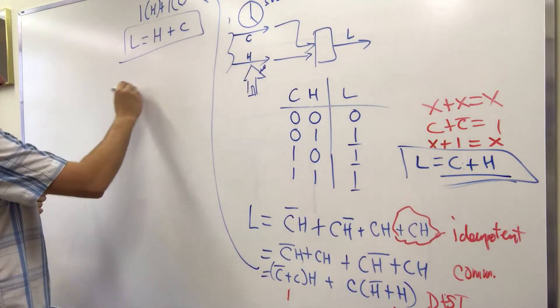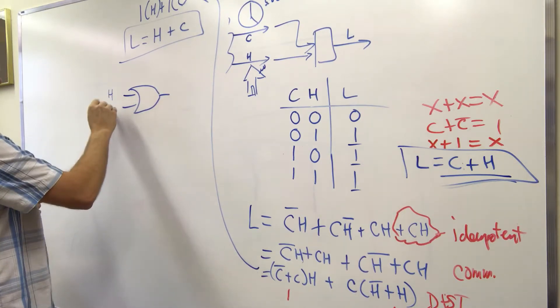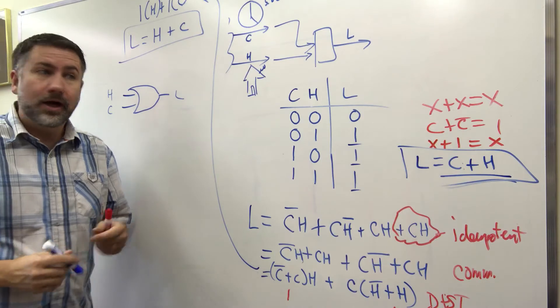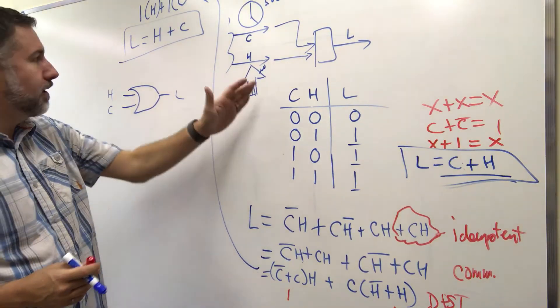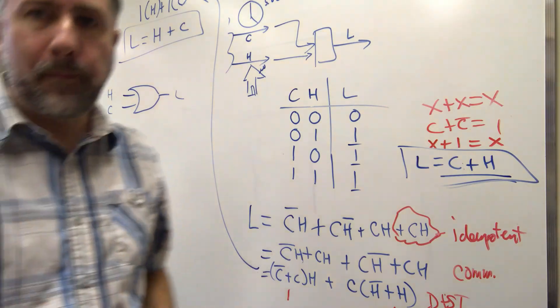So here's the circuit, right? H and C and L, that's the circuit. It's just an OR gate, no big deal. But for more complicated problems, this process will allow us to get the answer every time.